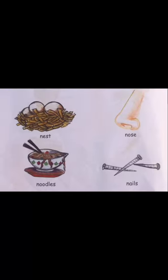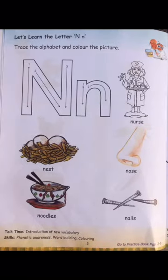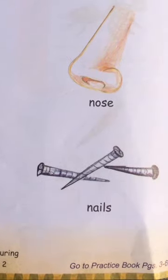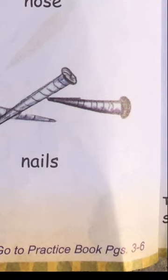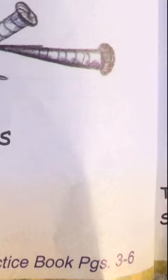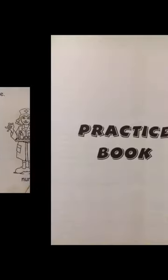Now come to the practice book portion. Aapka jo practice book hai, yeh iska portion aapki English hi ki book mein maujood hai. Practice book ki page number 3 par aa jaayein. Jo aapne abhi N letter padha hai, iski book ke page ke last mein aapke paas given hai ki practice book ki kaun se pages aayenge. So aapne practice book ke page number 3 se 6 tak karne hain.